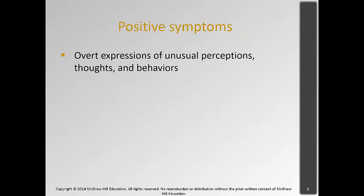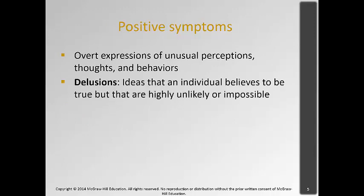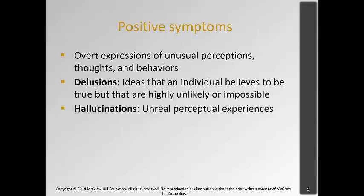Positive symptoms are overt expressions of unusual perceptions, thoughts, and behaviors. These include delusions — ideas that an individual believes to be true but are highly unlikely or impossible, like believing the CIA implanted an electrode to monitor them. Many people have delusions where they believe they are famous, or that a famous person is in love with them. This is often seen with stalkers found in celebrities' homes. Hallucinations are unreal perceptual experiences where you see, hear, smell, or feel things on your body that aren't actually there.